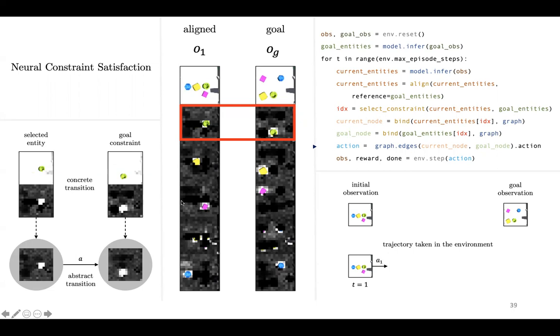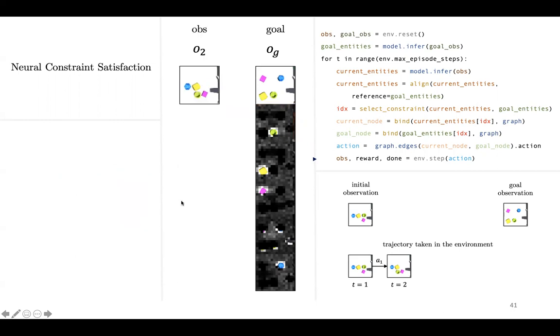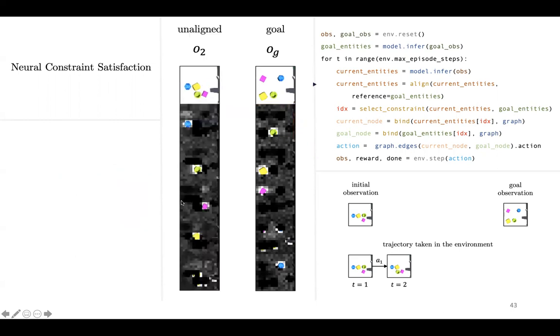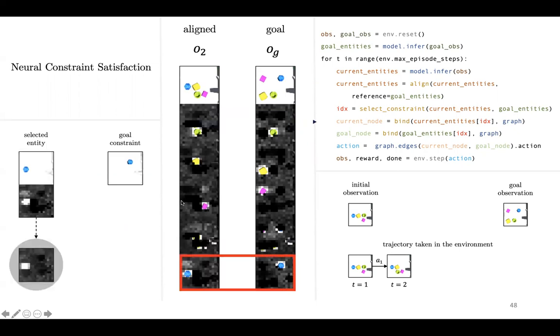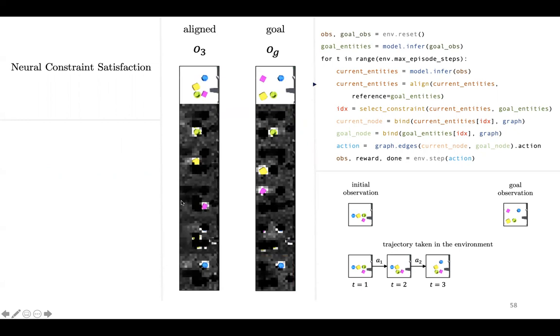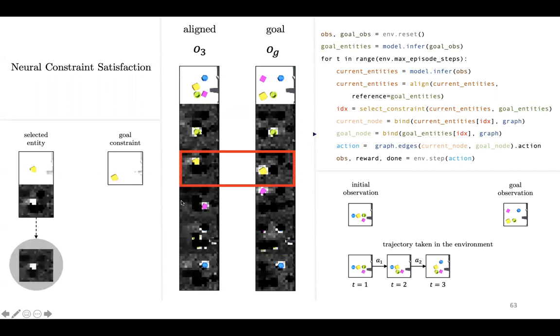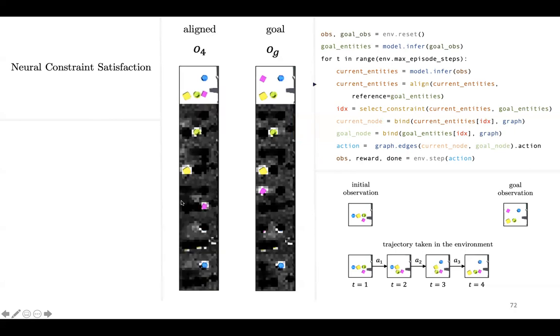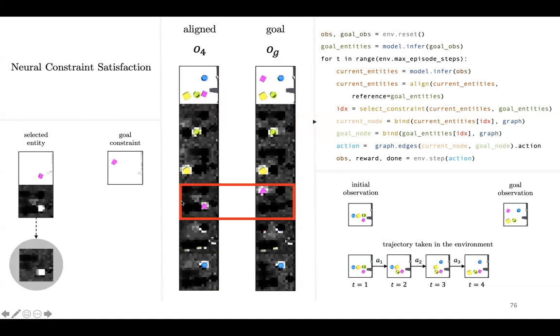We take that action in the environment, observe the resulting observation, and now we see a new observation and repeat the process. Notice that these edges, whose nodes we bind to, are agnostic to the entity type and context entities, so each edge can be reused for other scenarios too. We do this for every single entity, and then we are done.